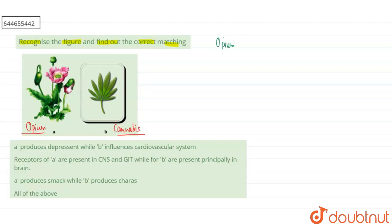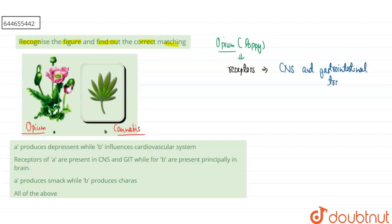The opium plant, whose common name is poppy, produces opioids. The receptors of this plant are found in the central nervous system, and they are also present in the gastrointestinal tract — also known as the alimentary canal or GIT.